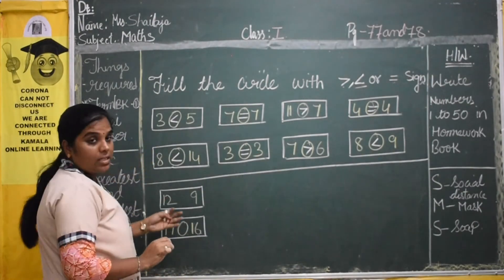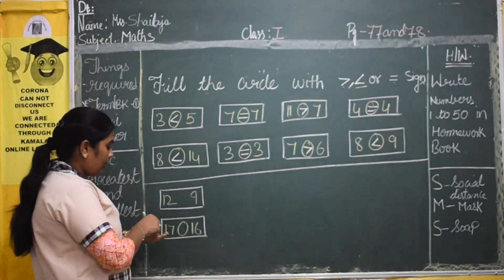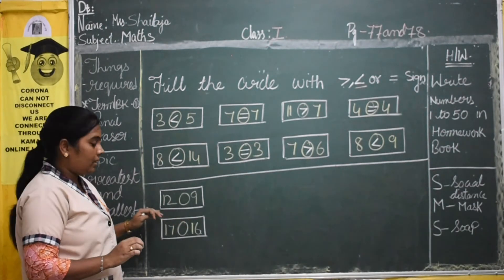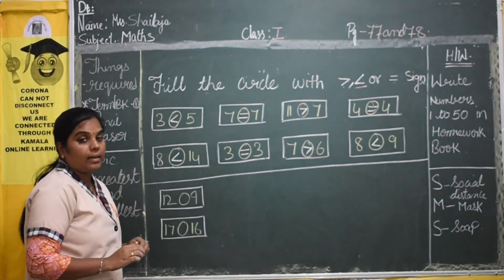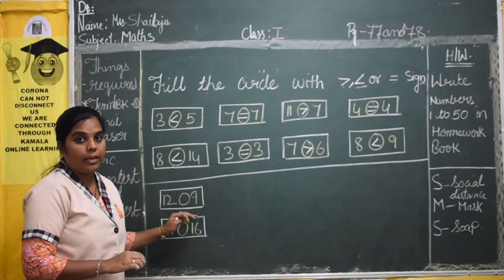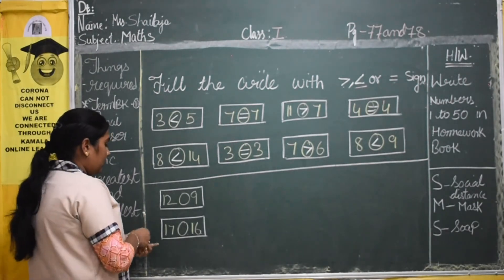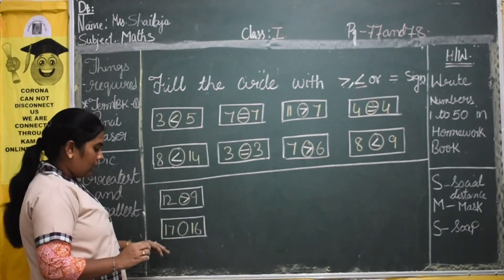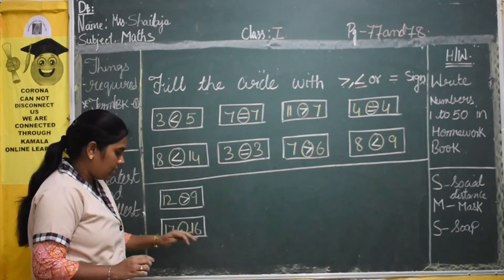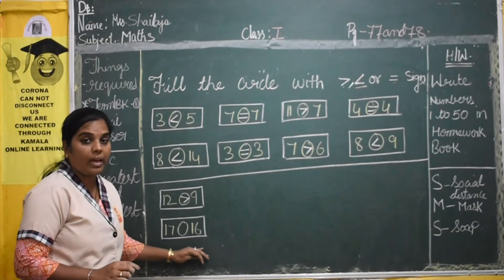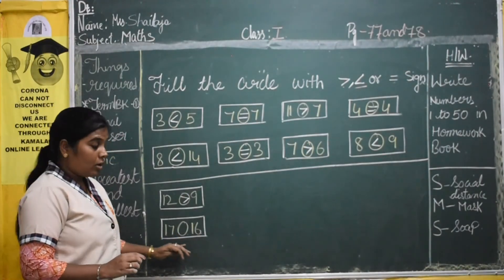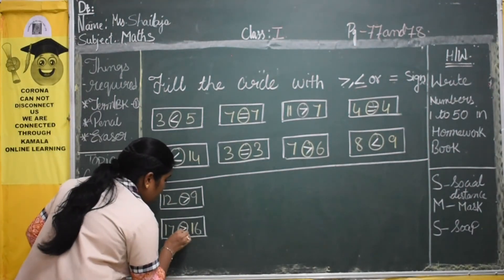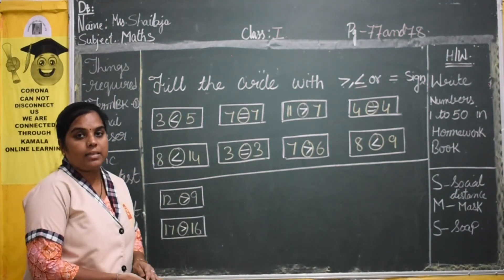This is the last one. Here we have 12 and here we have 9. Which is the greatest number? 12 is the greatest number. So 12 is greater than 9. Now the last one — here we have 17 and here we have 16. So 17 is greater than 16.